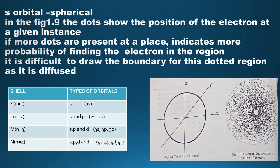It should be noted that it is difficult to draw the boundary of the stated region as it is diffused. The various types of orbitals present in each shell are summarized below. The first shell (K shell) contains only the s sub-shell. The second shell (L shell) contains s and p sub-shells. The third shell contains s, p, and d sub-shells, and the fourth shell also contains s, p, d, and f sub-shells. The s orbital of the K shell is called 1s.